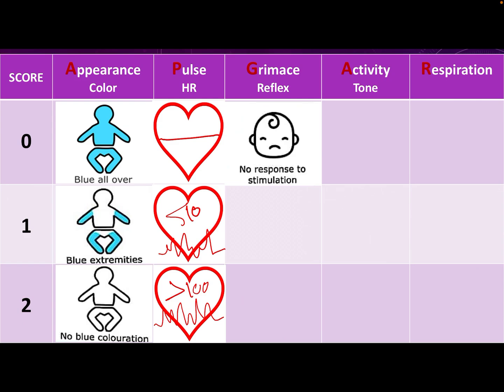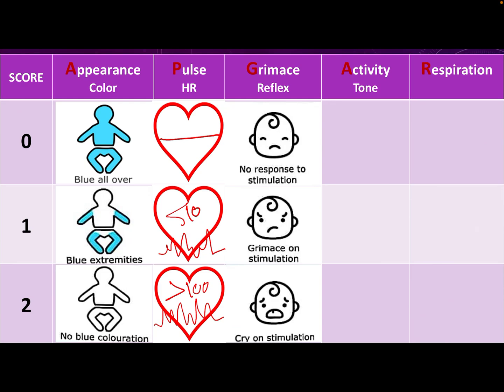For grimace, this is assessed by inserting a small suction catheter in the nose of the baby and checking the response. If there is no response at all, the baby scores zero. If there is just a grimace or facial expression only, he scores one. If the baby is sneezing or crying, he scores two.